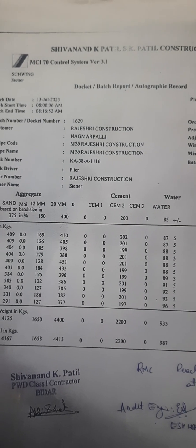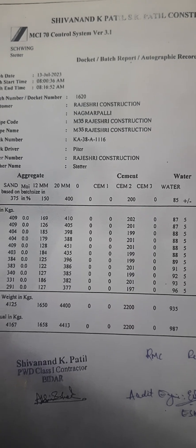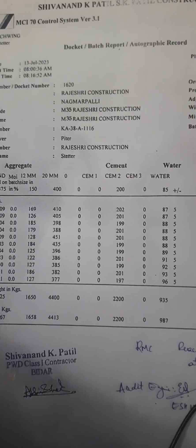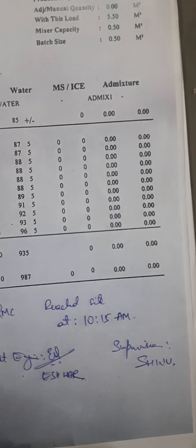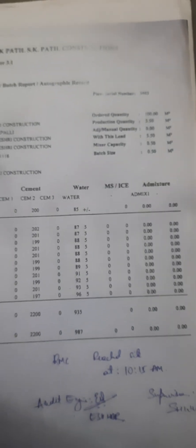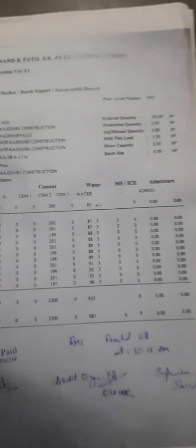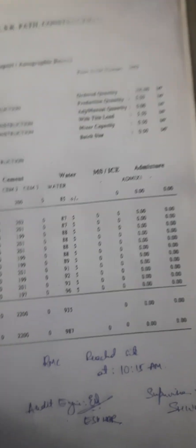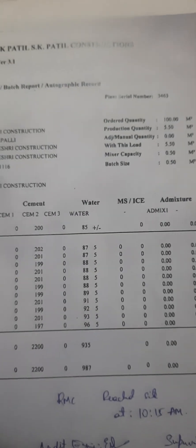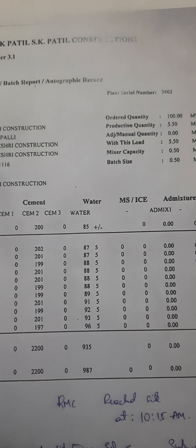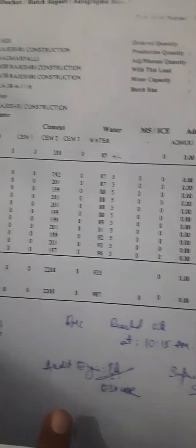The concrete needs to be placed within that time because after two and a half hours the setting of the concrete starts. From 8:16 to 10:15 is two hours, so 10:45 will be the final setting time. Within that half an hour, the pouring and placing of the concrete must be completed.